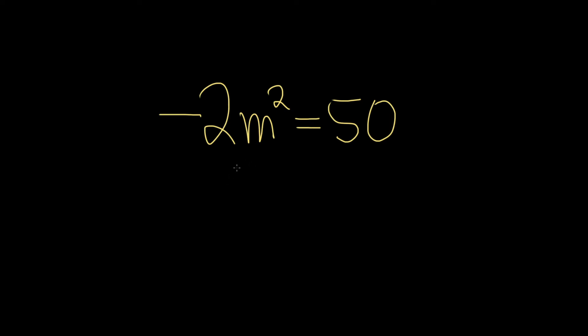In this problem, we have to solve this equation for m. So the goal is to use something called the square root property. We'll start by trying to isolate the m squared term.